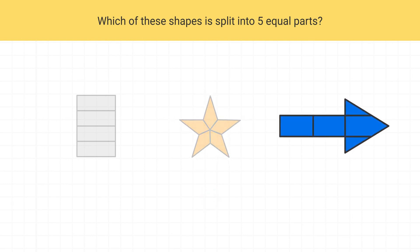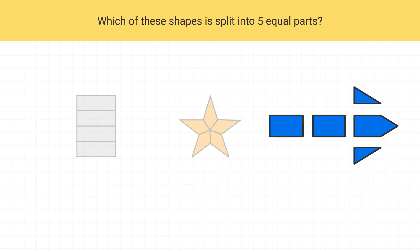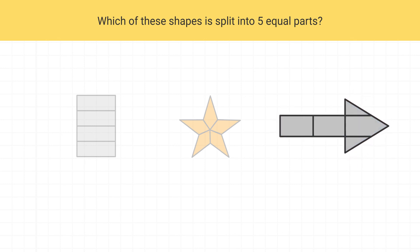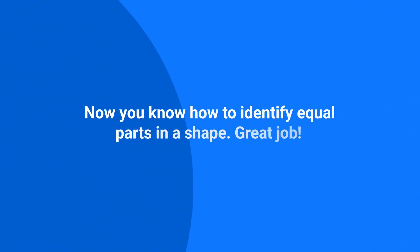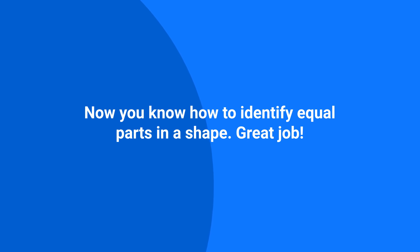This last shape is split into one, two, three, four, five parts, but they are not all the same size. We can see that some of the pieces are bigger than others. That means this shape is our only correct answer. Now you know how to identify equal parts in a shape. Great job!